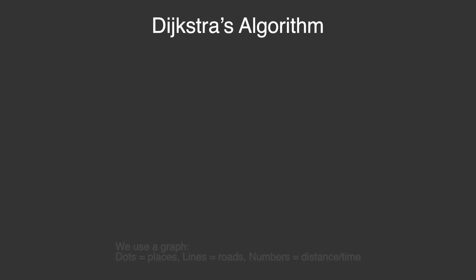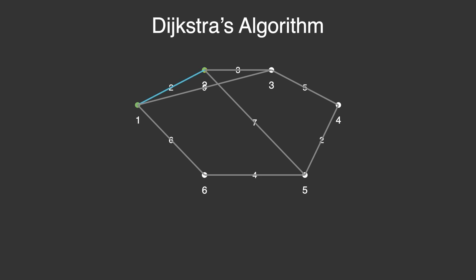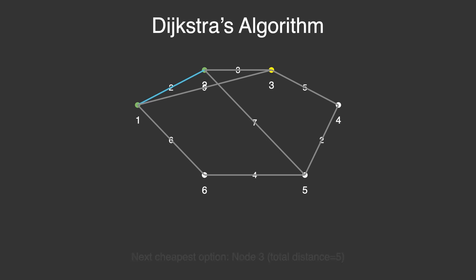From here, the algorithm looks at all possible paths and picks the closest one. That's Node 2, at a distance of 2. Next, it checks the next cheapest option, Node 3, bringing the total distance to 5.